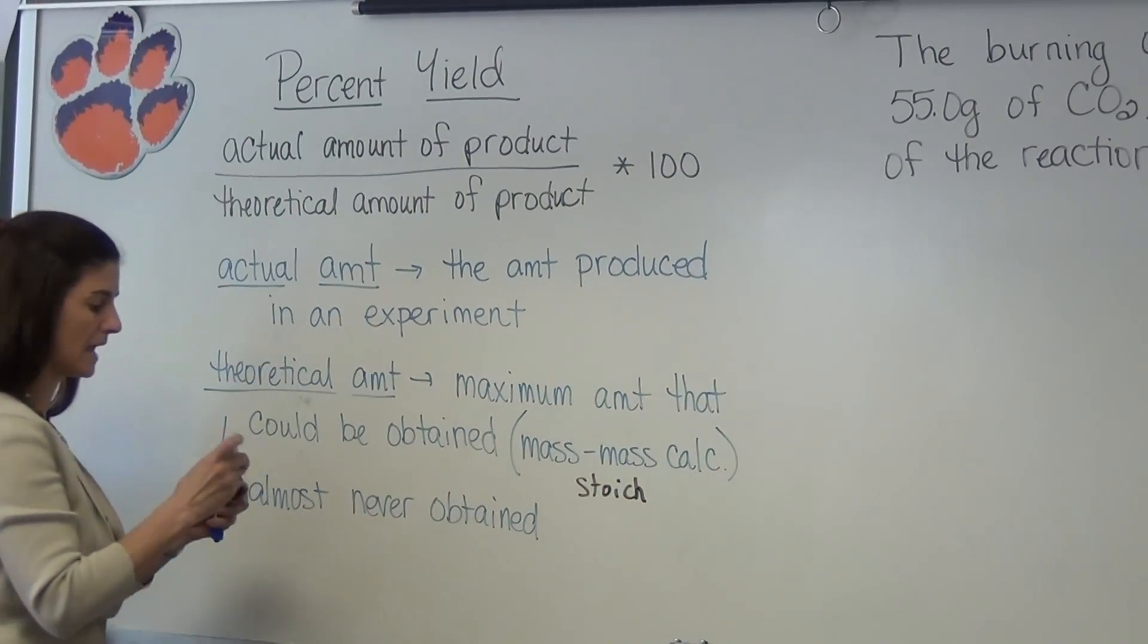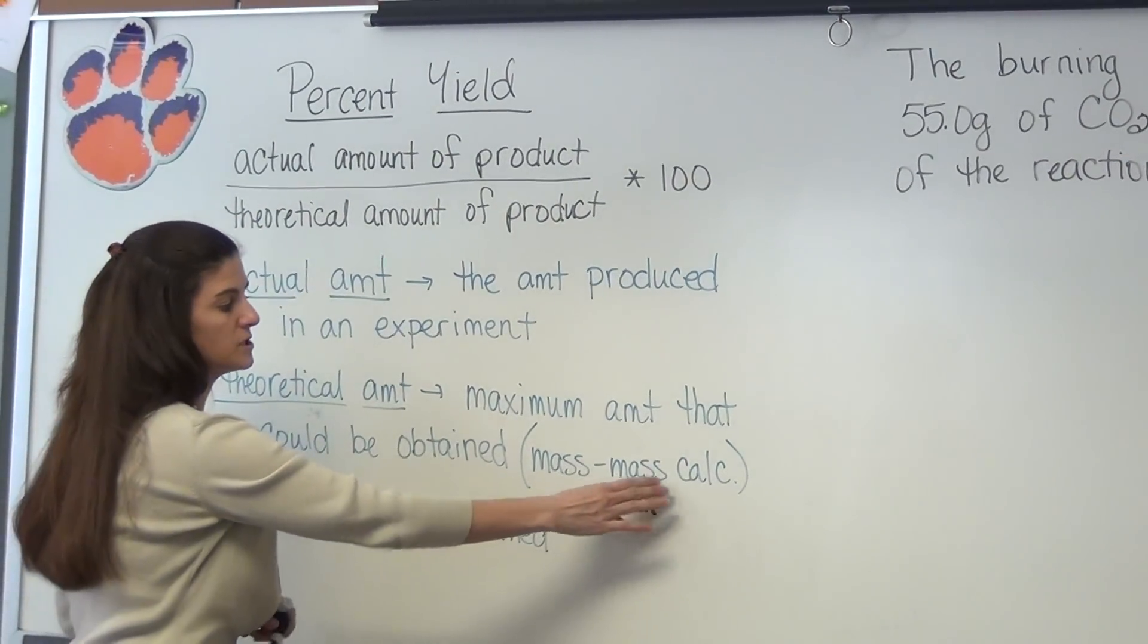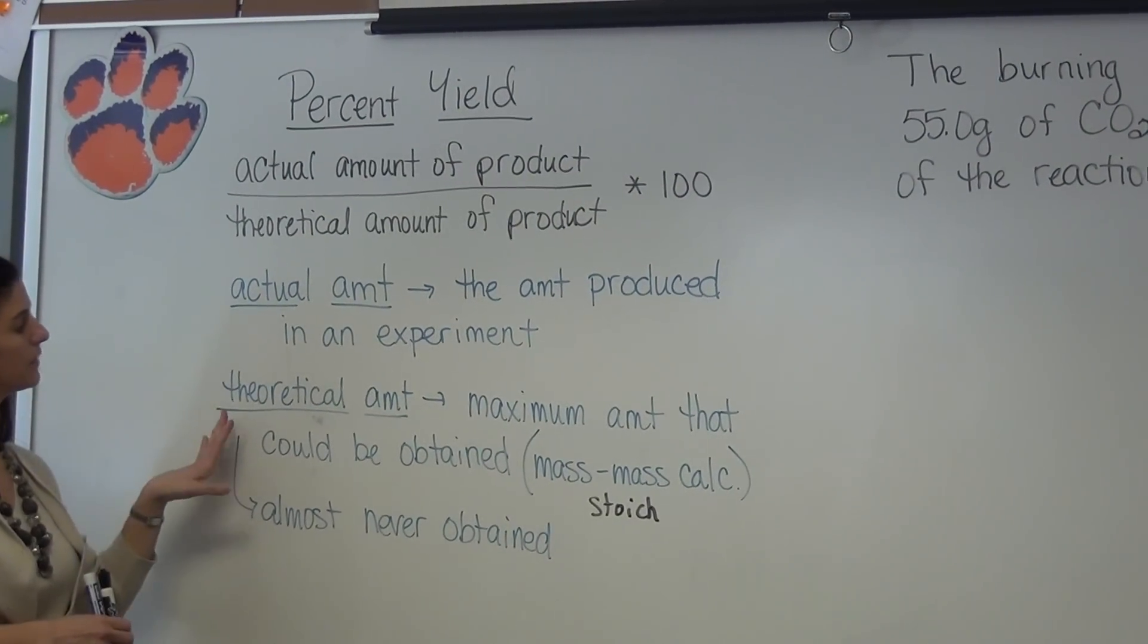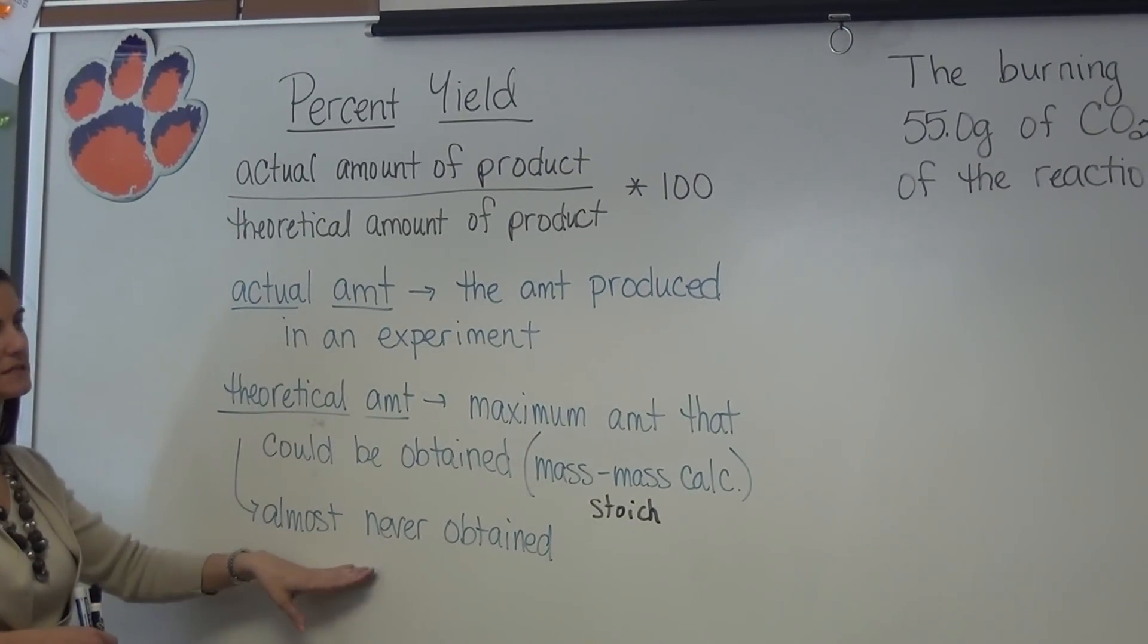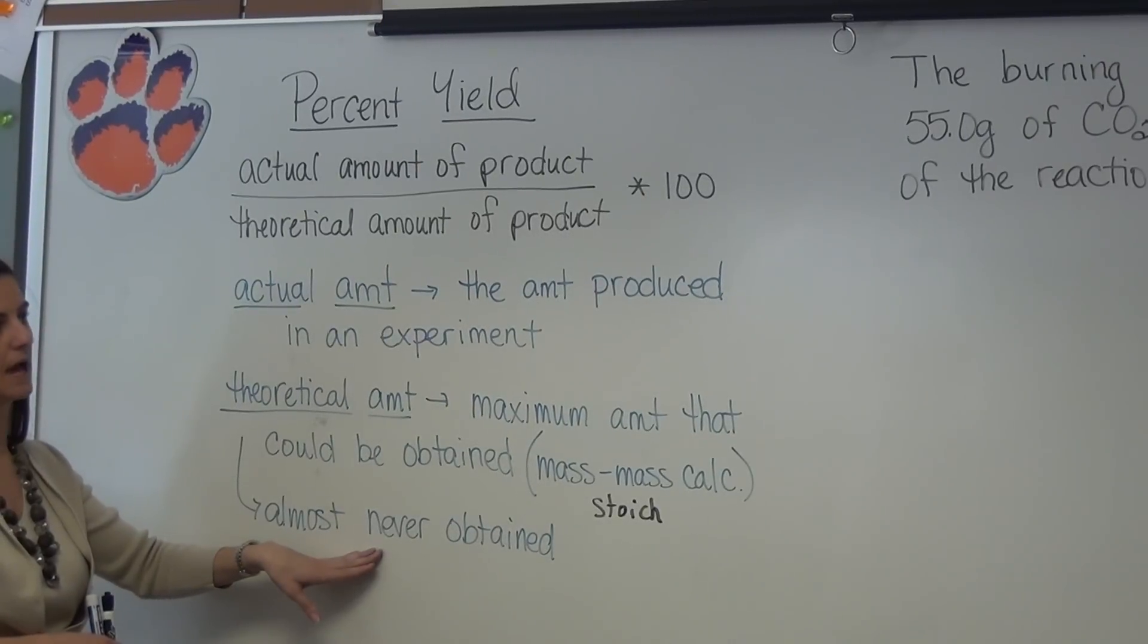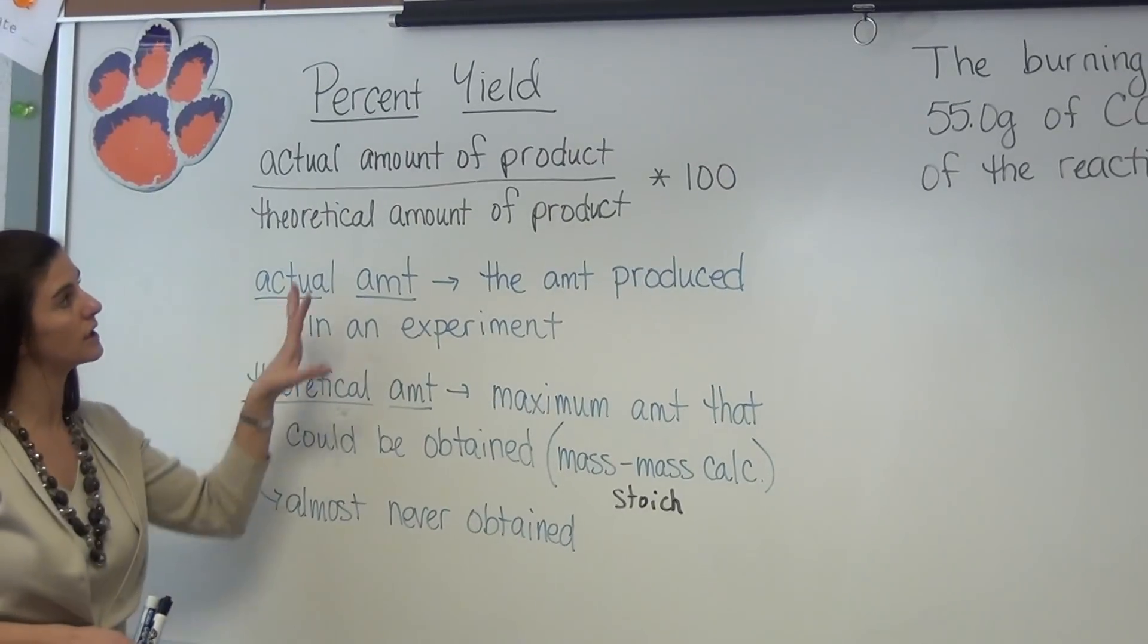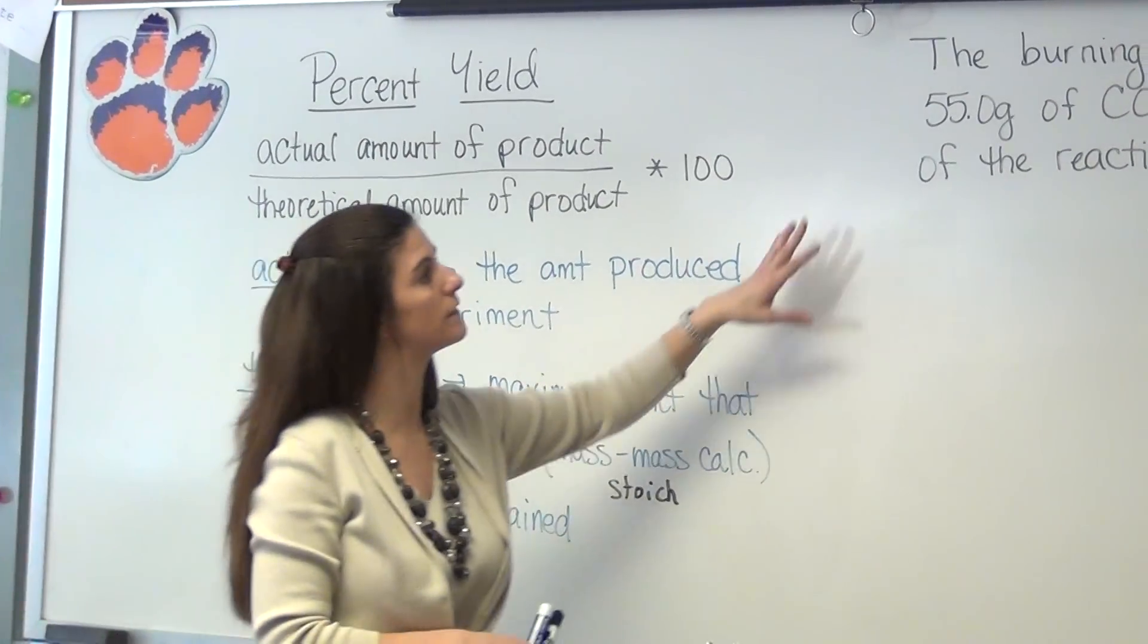Okay, so we're going to start with the given mass and we're going to convert it all the way to the mass that we should be able to obtain. The theoretical amount is basically never obtained in a lab because there's always some source of error. So we'll look at how to use this formula with this example.